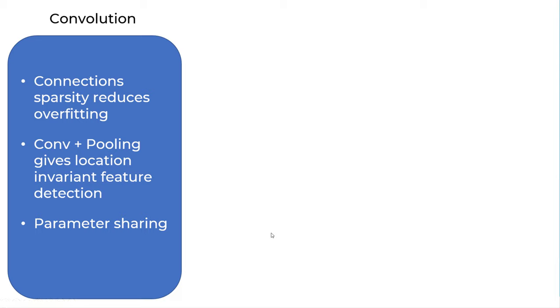There are three benefits of convolution operation. The first one is connection sparsity reduces overfitting. Connection sparsity means not every node is connected with every other node like in artificial neural network where we call that a dense network. Here we have a filter which we move around the image. And at a time, we are talking about only a local region. So we are not affecting the whole image.